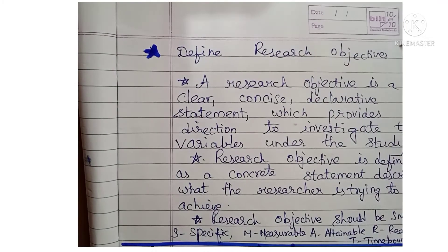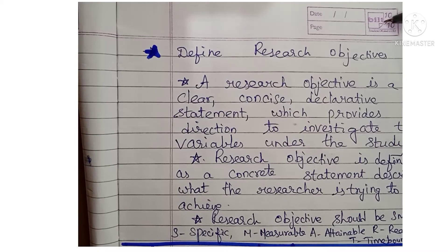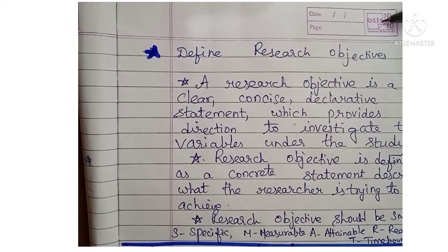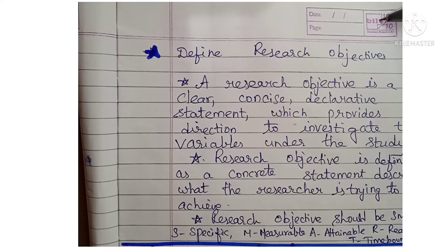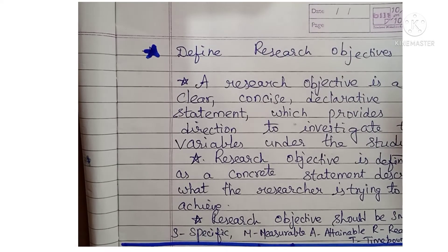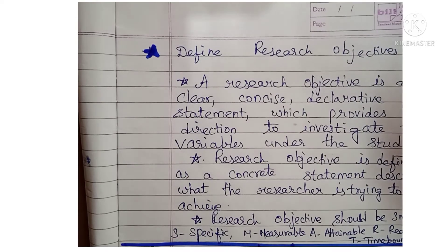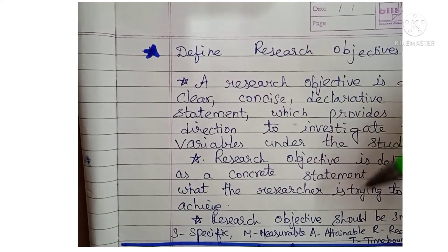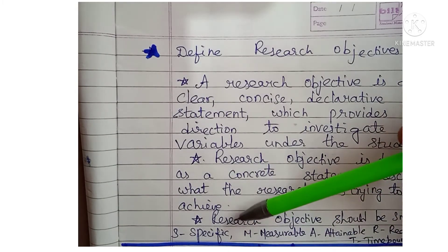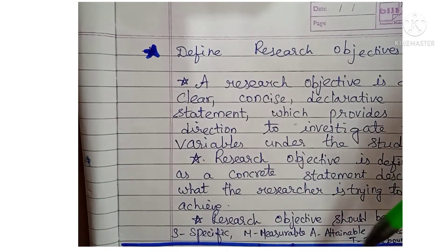Next: Define Research Objectives. A research objective is a clear, concise, declarative statement which provides direction to investigate the variables under study. A research objective is defined as a concrete statement describing what the researcher is trying to achieve. Research objectives should be SMART — an acronym where S is Specific, M is Measurable, A is Attainable, R is Realistic, and T is Time-bound.